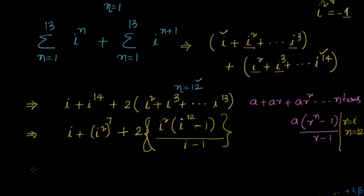So let us simplify this. This is equal to i + (i² is -1), (-1)^7 is -1, plus 2 into... Here I see something interesting. i^12 is (i²)^6, which is (-1)^6. Even power is equal to 1. So that becomes (1 - 1)/(i - 1), and this whole expression becomes 0. That means we are left with the answer, which is nothing but i - 1.